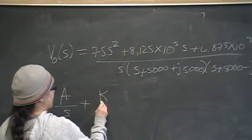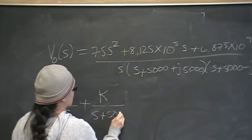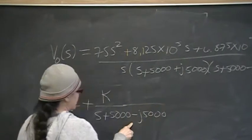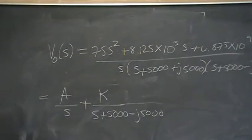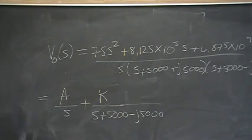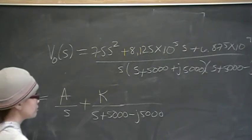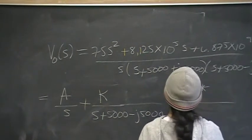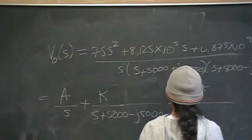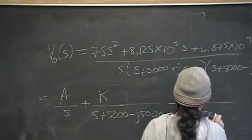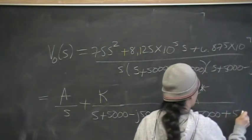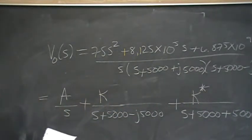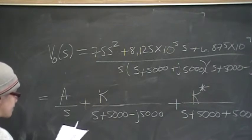I put the minus j term first on purpose to identically match the Laplace transform table, because that determines how you get theta. Once you have K, you automatically know K conjugate. So I'm looking for A and K — and by knowing K, I'll automatically know K*.